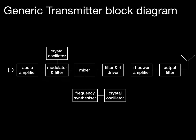Here we have the generic block diagram again, and we're going to start looking at what signals we might find as we travel around it. Out of the audio amplifier we will have audio frequencies. The audio frequencies used for voice in the amateur world are 300 Hz to 3.4 kHz — quite adequate for passing voice, though not adequate for a music broadcast. As we're not allowed to do that, 3 kHz of bandwidth is fine.